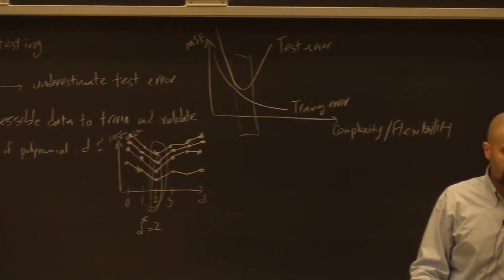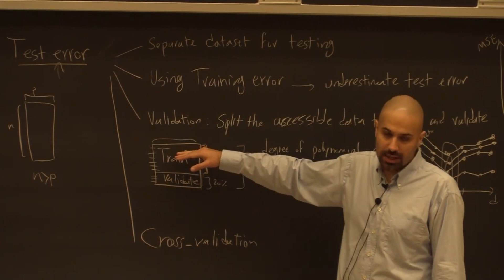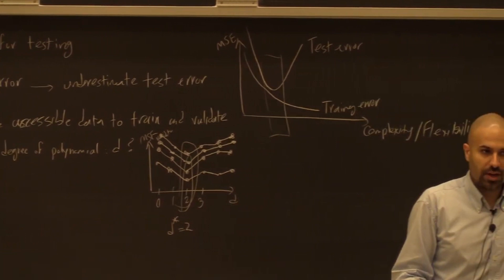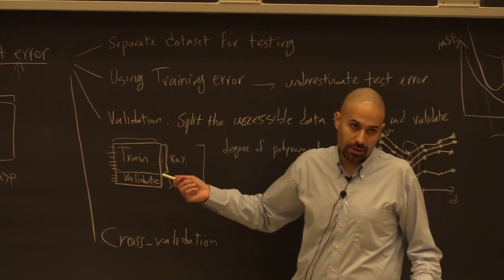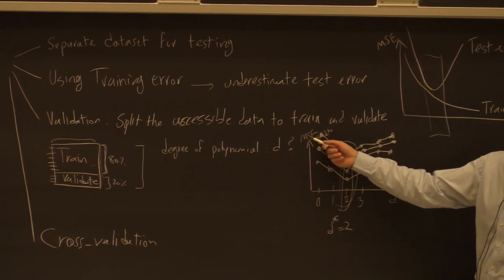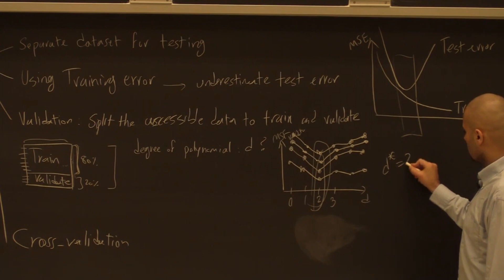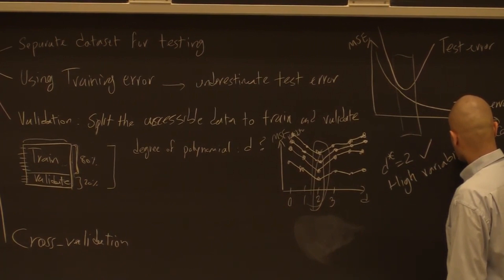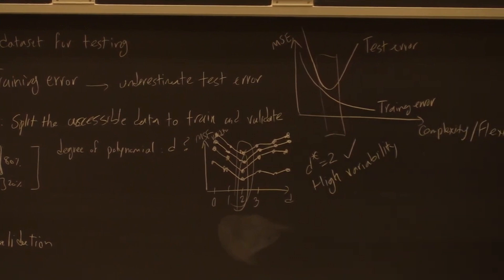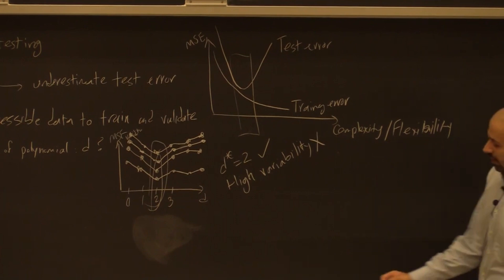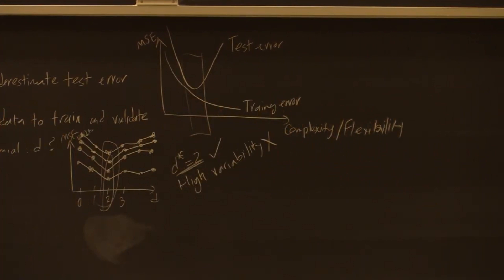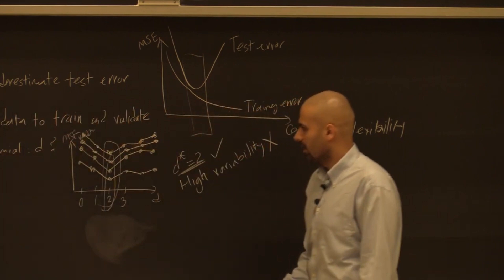Some data points are very informative for training but challenging for validation. If they end up in training, the model becomes stronger; if in validation, we overestimate the test MSE. This is the issue with validation: high variability over different repetitions of the process. If we only care about finding the hyperparameter, validation is okay. But if we want a good measure of test error, we need a more advanced technique — cross-validation — which gives low variability and a better estimate of actual test error.